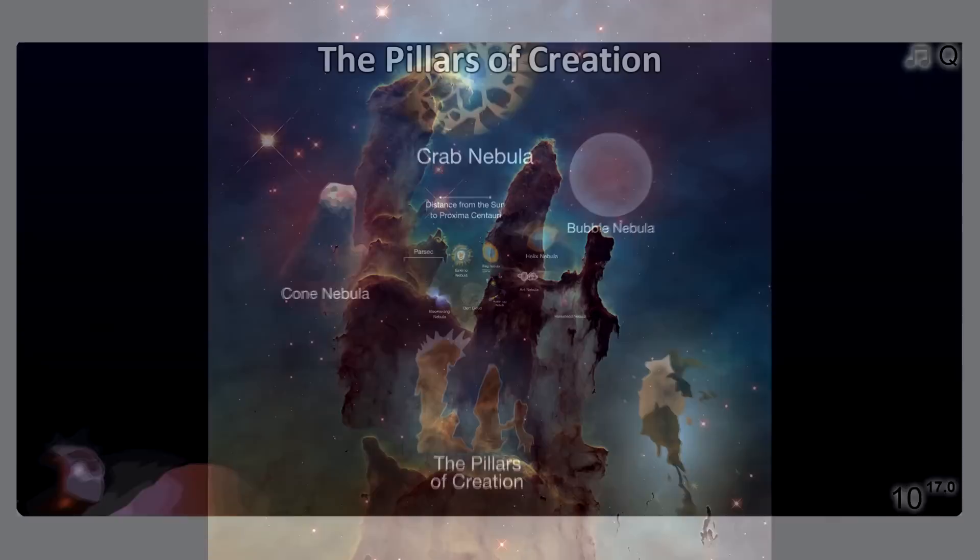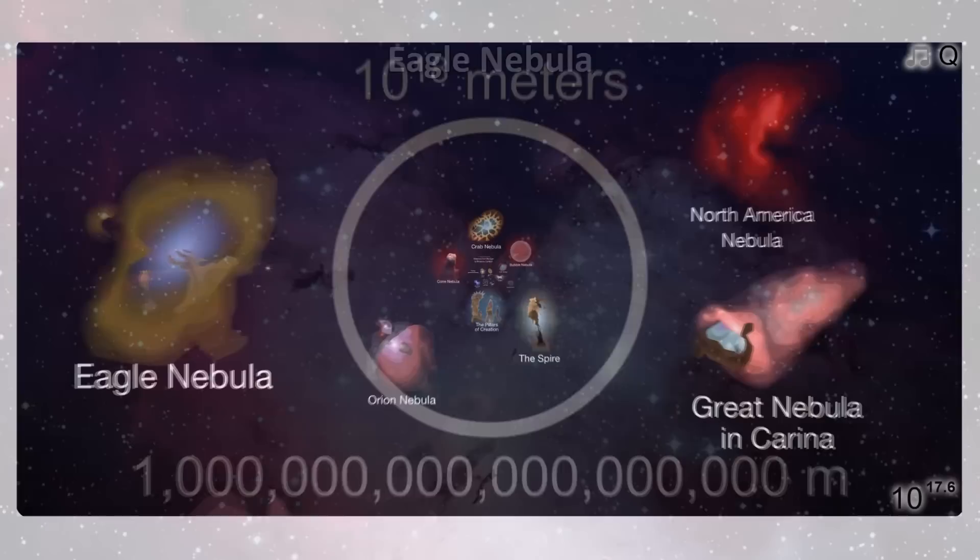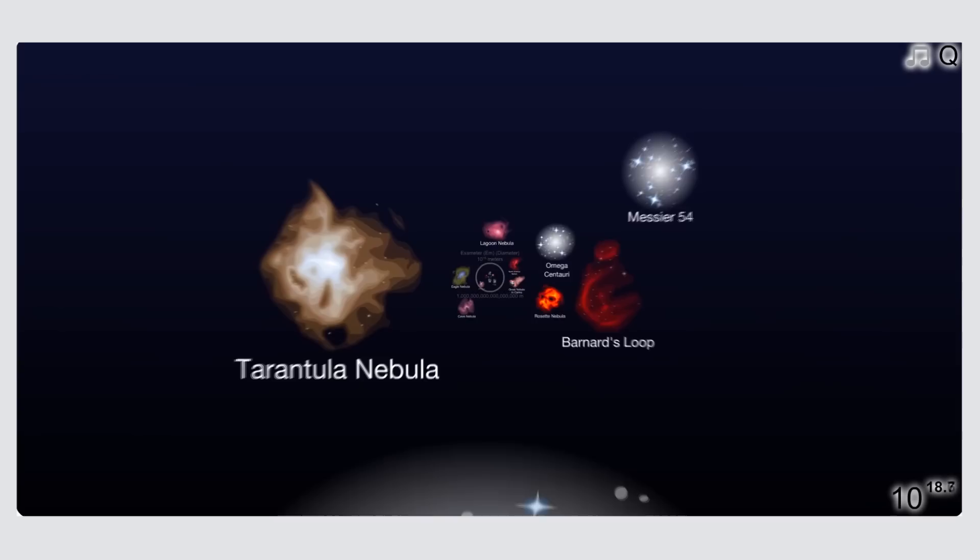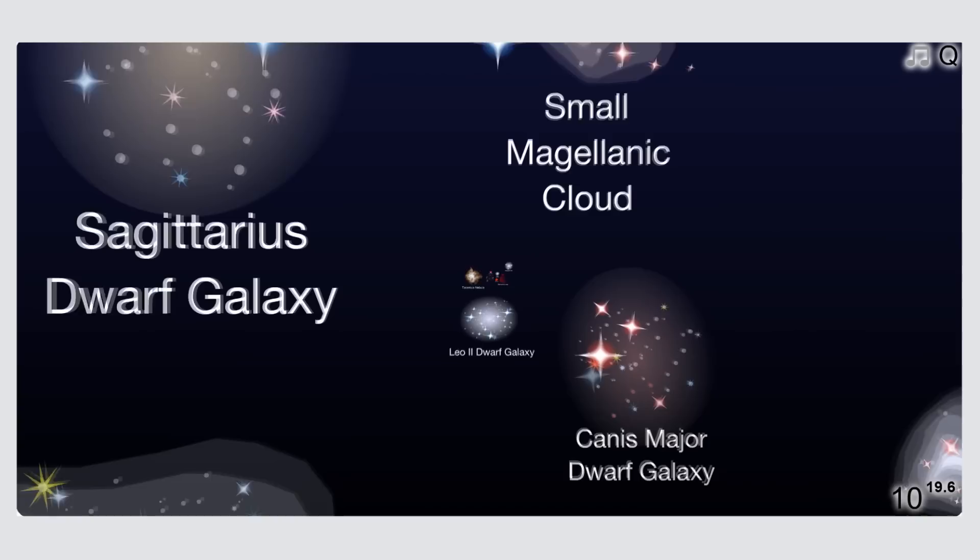Things like the Pillars of Creation, and the Eagle Nebula. As well as some of the smaller galaxies, that surround our Milky Way galaxy. Our galaxy is about 106,000 light years across, or almost exactly 1 quintillion kilometers, that's 10 to the 21 meters, containing anywhere from 250 billion to 400 billion stars.